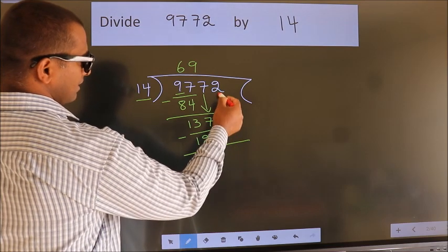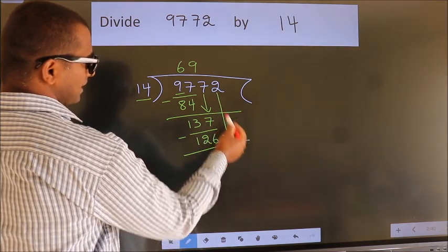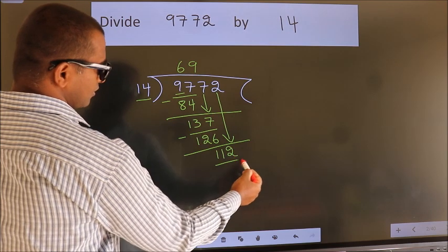After this, bring down the beside number. So 2 down. So 112.